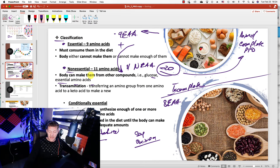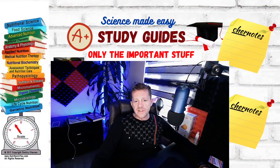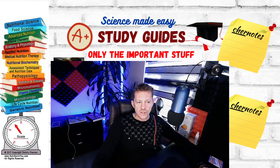Non-essential amino acids can also be present in animal products as well as in plant products. This is the overview of essentials and non-essential amino acids.